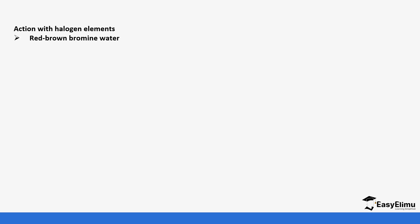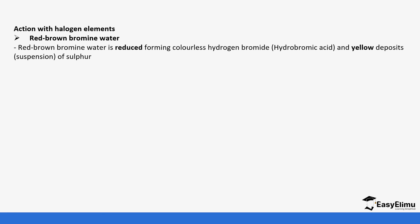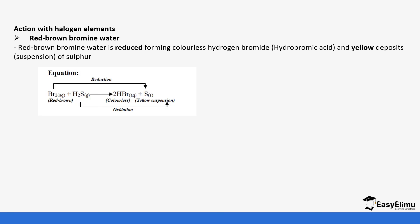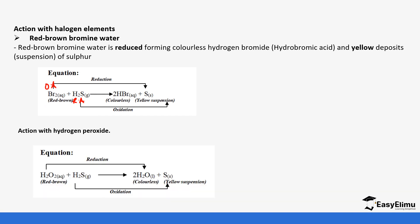Hydrogen sulfide also reacts with halogens, for example bromine water. Bromine water is red-brown, and it is reduced to form colorless hydrogen bromide acid and yellow deposits of sulfur. The bromine solution turns colorless due to the formation of hydrogen bromide — bromine is the oxidizing agent and hydrogen sulfide is the reducing agent. It also reacts with hydrogen peroxide, reducing it to water while itself is oxidized to sulfur. Hydrogen peroxide is the oxidizing agent and hydrogen sulfide is the reducing agent.